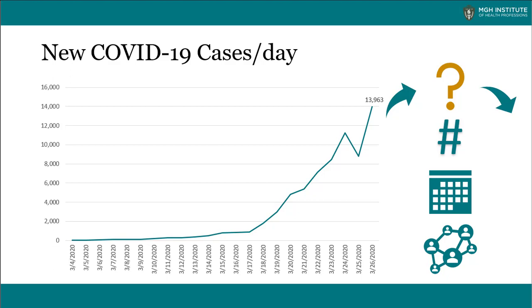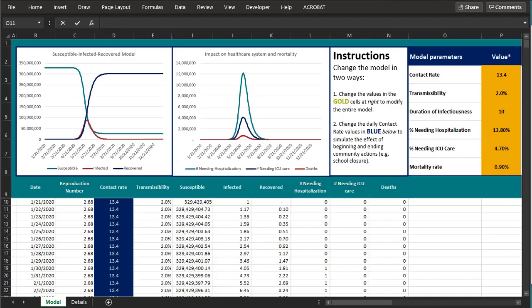The short answer is that some intervention will be necessary until at least half of the population either develops immunity through vaccination or develops immunity by contracting COVID-19 and recovering. The development of immunity in the population can happen rapidly or slowly, and this video will walk you through a tool for modeling the spread of COVID-19 and the effect of community mitigation efforts.